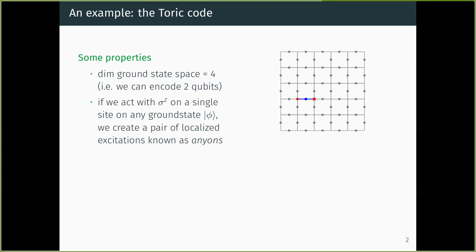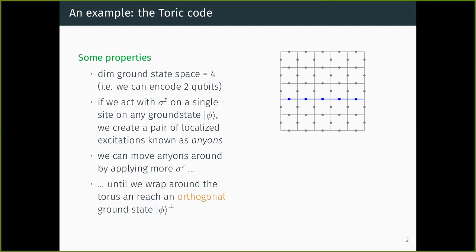If you keep applying sigma-z to other qubits, the localized excitation moves around while keeping the total number of excitations constant. You can wrap this excitation around the torus until the loop closes and the two excitations disappear. What you obtain is a ground state, but an orthogonal one to where you started — this is the quantum equivalent of flipping bits in the repetition code until you reach the opposite encoded word.